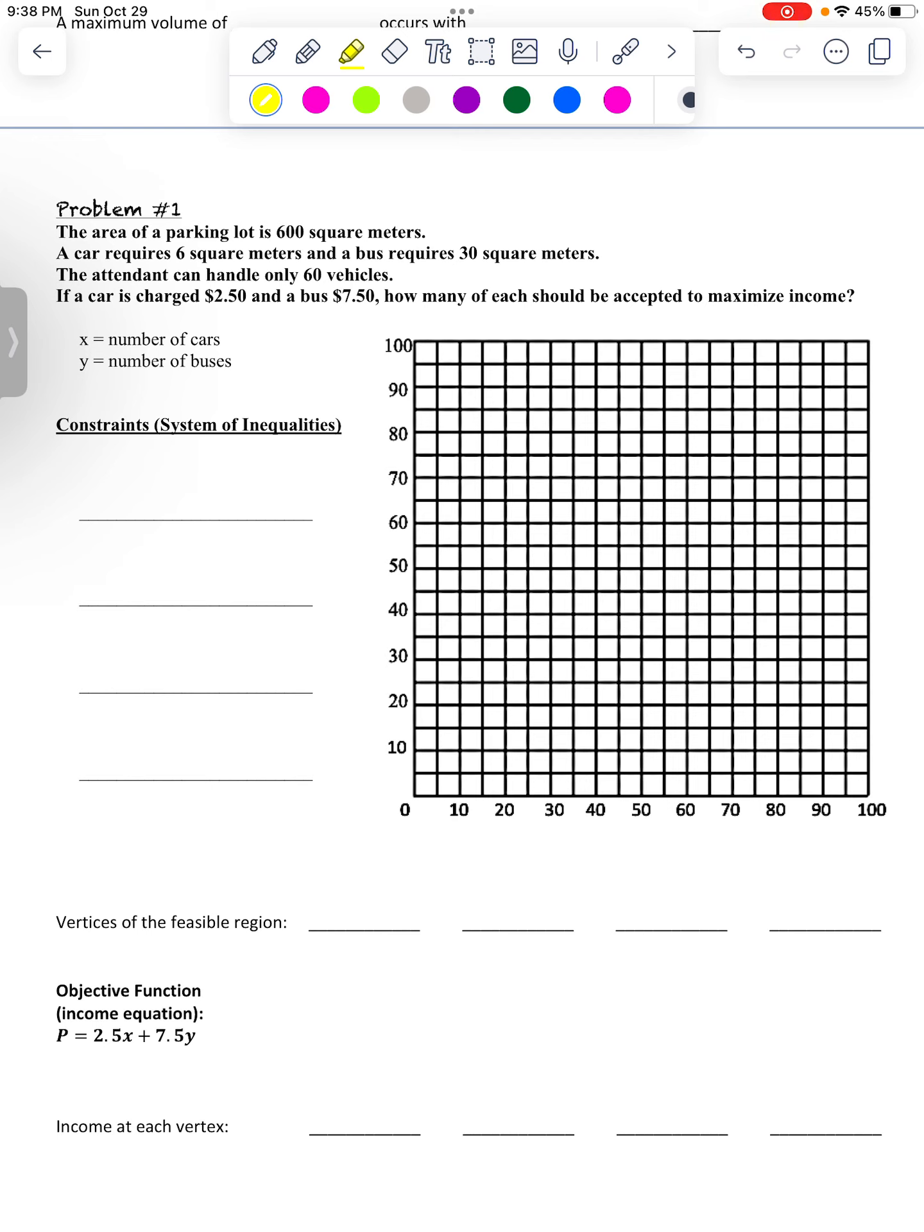So let's just read. The area is 600 square meters of a parking lot. Each car requires six square meters while a bus requires 30. So all of this is kind of about how much space there is. And there's a limit because the space has to stay less than or equal to 600 because that's all you've got. An attendant can handle only 60 vehicles. So that's another constraint. That's the number of vehicles. Total has to stay less than or equal to 60. Car charges $2.50 and a bus $7.50. How many of each should be accepted to maximize income?